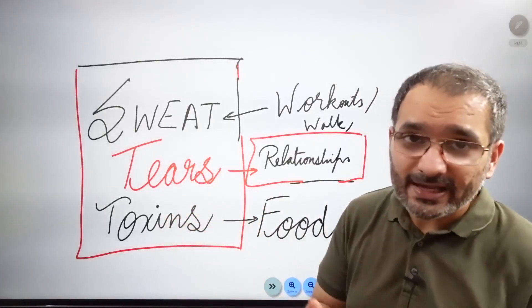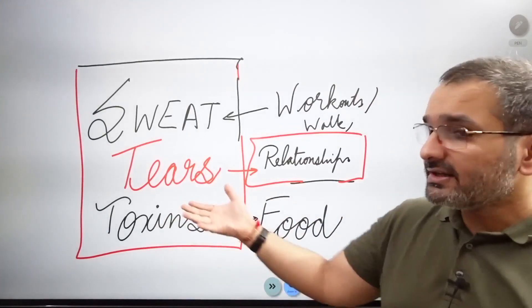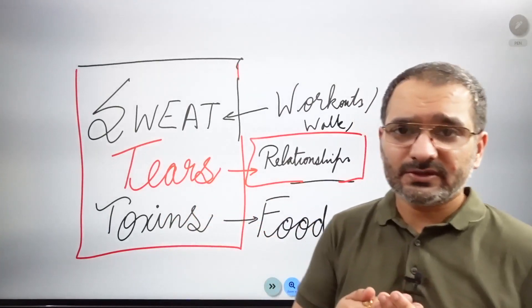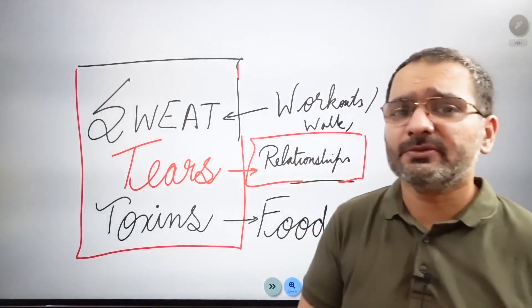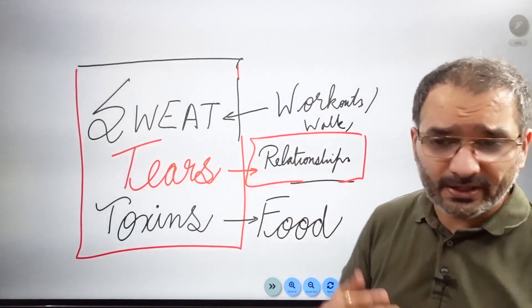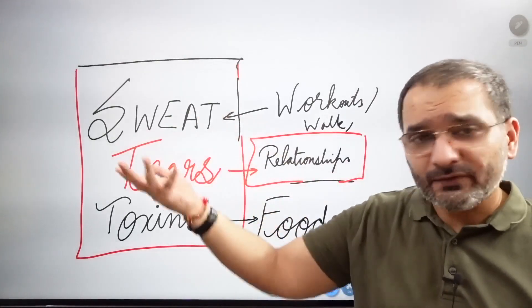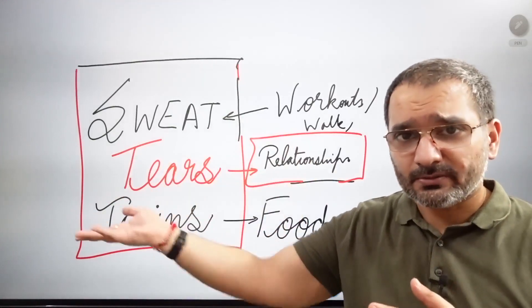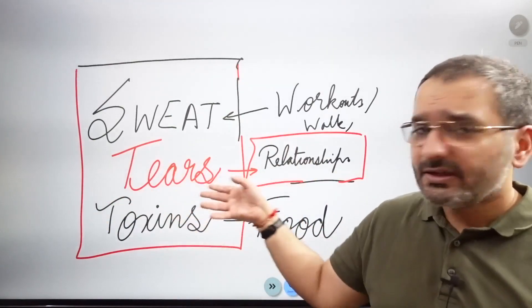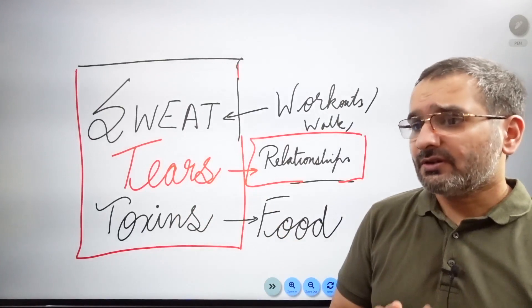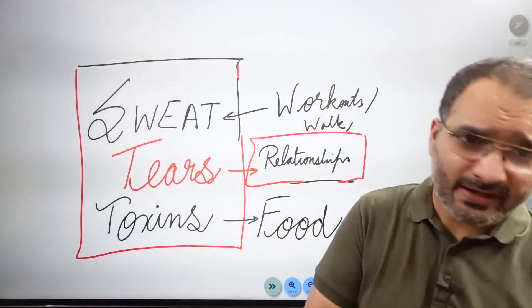Give the body 30 to 40 minutes to spend time with itself. Then tears - usually people know this. Tears are mostly caused by relationships. Relationship with what? Your parents, siblings, loved ones, crushes, boyfriends, girlfriends.